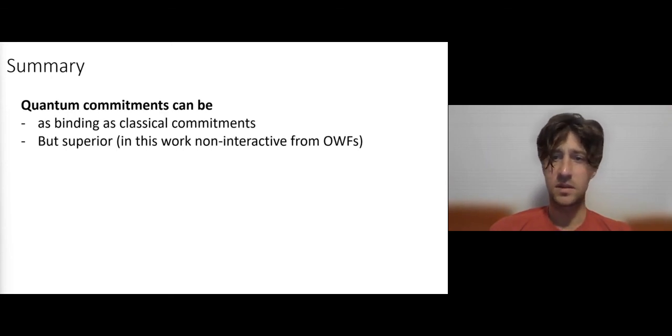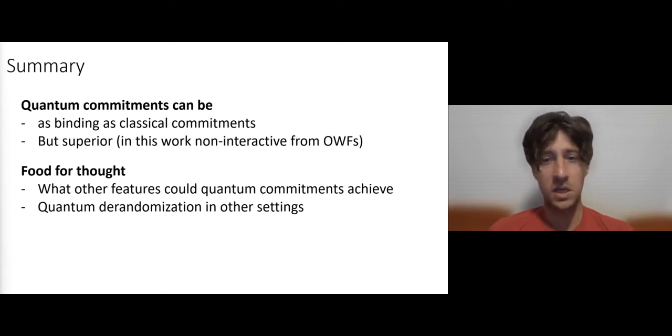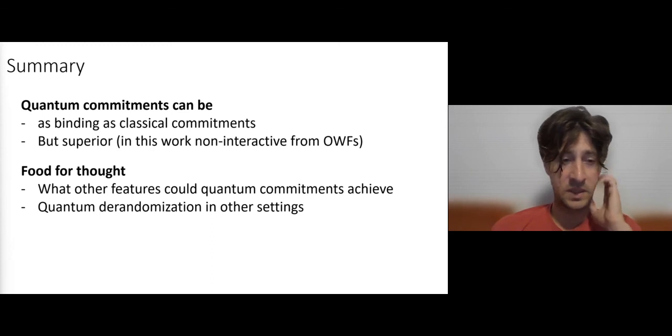So let me summarize. Quantum commitments can be as binding as classical ones, but at the same time, also superior. And specifically, we show that they can be obtained non-interactively from one-way functions. And one great question is, of course, which other interesting features can such quantum commitments have? And perhaps another interesting question is whether we can apply similar ideas, for example, such derandomization for other primitives, or perhaps in totally different settings, maybe in complexity theoretic settings. So this is it for this time. Thank you for listening.